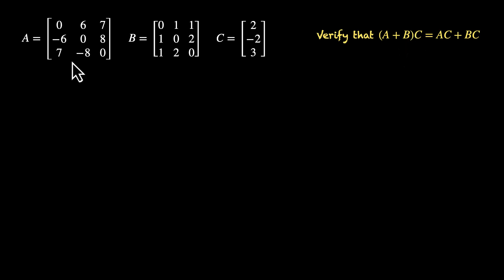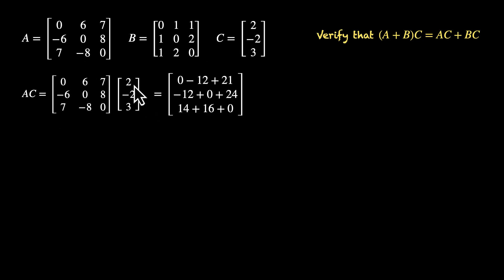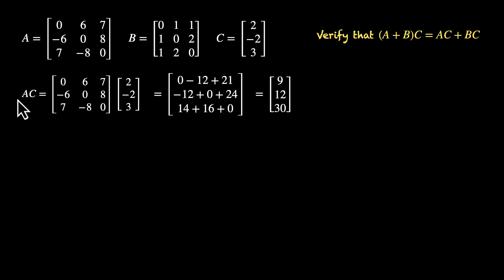Let's find the right-hand side — let's find AC and BC first. A times C: 0×2 = 0, 6×(−2) = −12, 7×3 = 21, so the first element is 0 − 12 + 21 = 9. Second row: (−6)×2 = −12, 0×(−2) = 0, 8×3 = 24, giving 12. Third row: 7×2 = 14, (−8)×(−2) = 16, 0×3 = 0, giving 30. So AC is the 3 by 1 matrix [9, 12, 30].